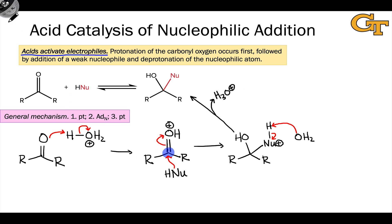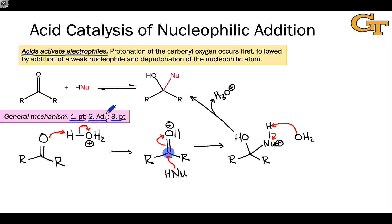Before moving forward, it's worth emphasizing this general mechanistic pattern, because we're going to see it a lot in acid-base catalysis. First, a proton transfer occurs — to the electrophile since we're using an acid catalyst — and then the business takes place: nucleophilic addition to a polarized pi bond, facilitated by protonation since that makes the electrophile stronger. Then at the end, to regenerate the catalyst, there's a proton transfer in the opposite direction. A professor described this as a dance: proton on, something happens, proton off. That repeated cycle — proton transfer, the business, then a proton transfer in the opposite direction — is the essence of acid-base catalysis.